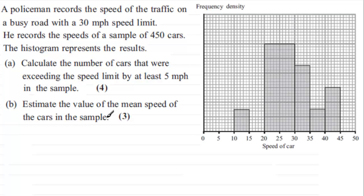And then we've got to go on and estimate the value of the mean speed of the cars in the sample. Now you should be familiar with the fact that the frequency is proportional to the area of the bars.